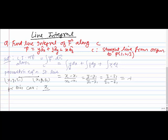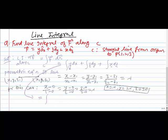Our equation becomes (x − 0)/(1 − 0) = (y − 0)/(2 − 0) = (z − 0)/(3 − 0) = λ. So we get x = λ, y = 2λ, and z = 3λ. From these: y = 2x so y dx = 2x dx; z = (3/2)y so z in terms of y gives (3y/2) dy; and x = z/3 so the last term becomes (z/3) dz. Now the integral becomes ∫ 2x dx + ∫ (3y/2) dy + ∫ (z/3) dz.